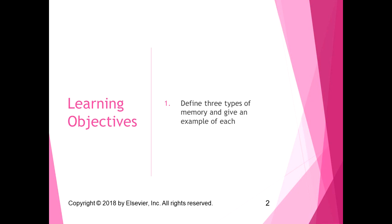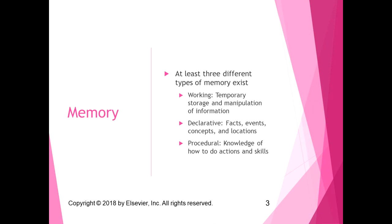There's only one learning objective: I want you to be able to define the three types of memory and give an example of each. At least three different types of memory exist, but we're just going to talk about these three. Working memory is temporary storage and manipulation of information — for example, if you ask me for your phone number, 206-125-3897, I have to hold onto that long enough to get it into my phone or write it down. That's temporary storage, and if you don't encode it, you won't remember it later.